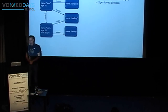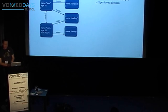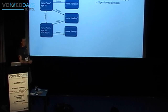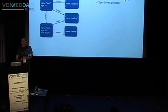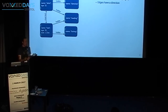A little bit of repetition. What are graph databases? Typically, graph databases store two things: vertices and edges. Vertices are schema-free objects, so you can store arbitrary data on vertices, and then you have edges which form relations between these vertices.